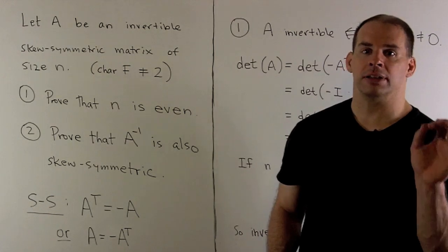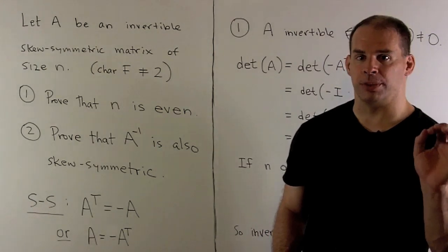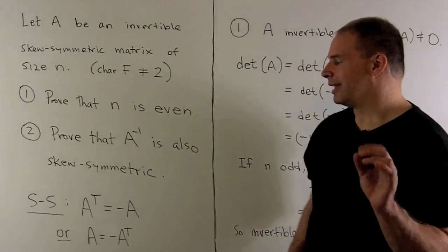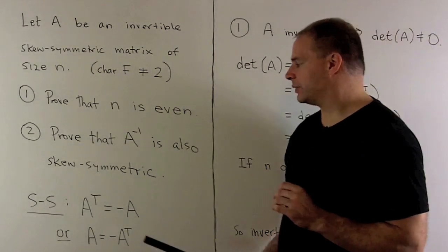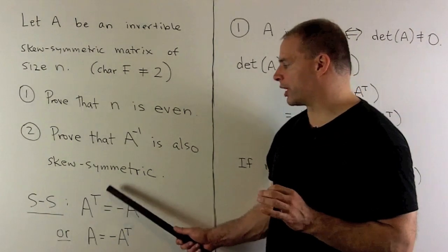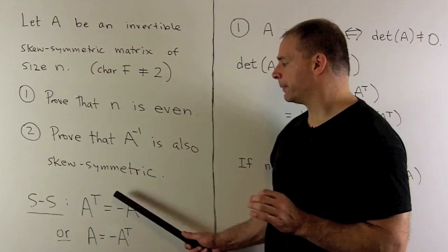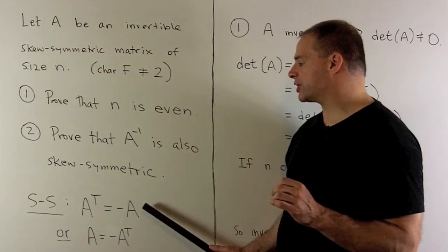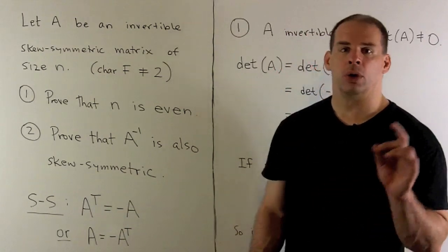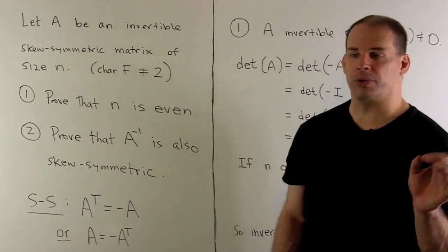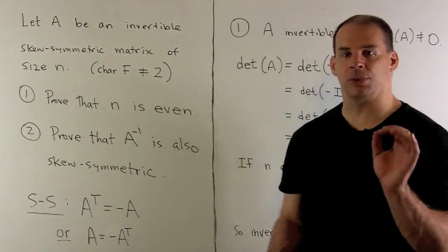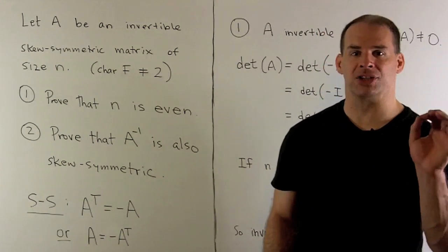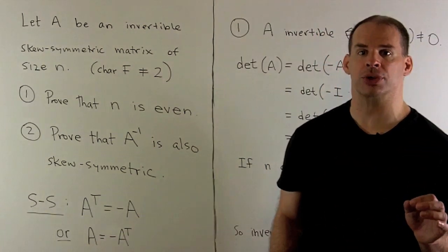The definition of skew-symmetric just means we take the transpose of our matrix and get back minus our matrix, or in a more useful form, our matrix is equal to minus its transpose.